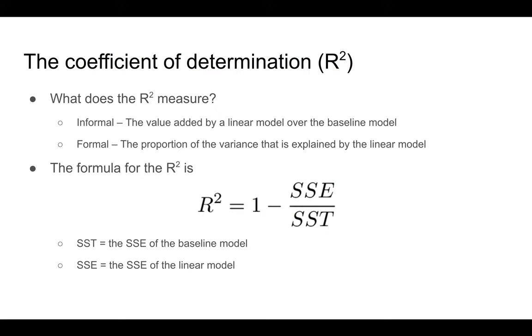The next metric is the coefficient of determination. It's really about how much of the variance in the response variable can be explained by the linear model. Informally, it captures the value that the linear model adds to the baseline model. This is the formula for r squared. It's 1 minus the sum of squared errors divided by the total sum of squares, which is basically the sum of squared errors of the baseline model.